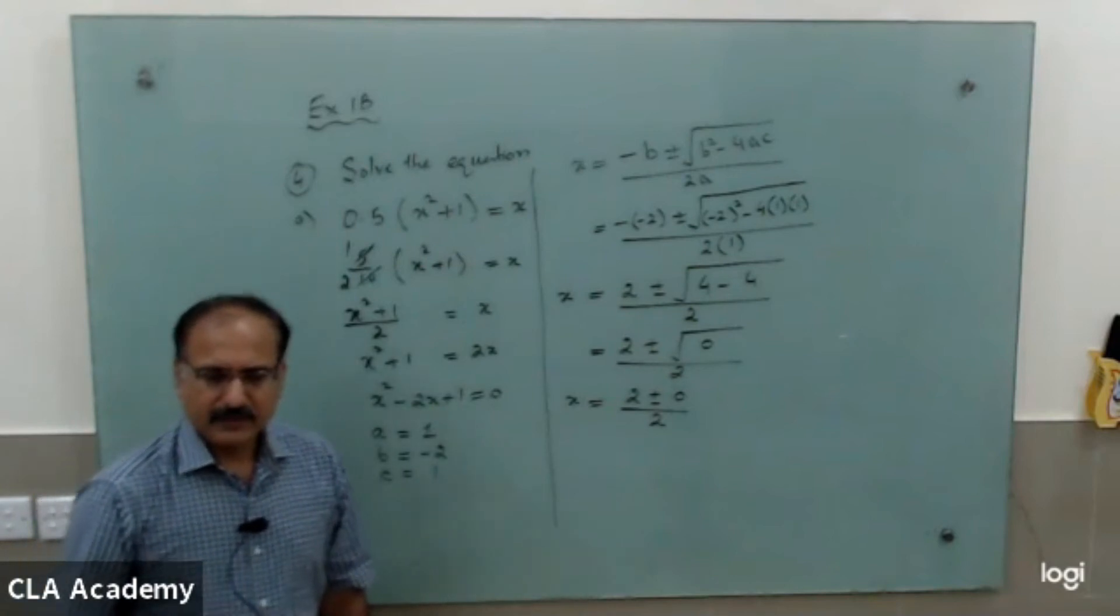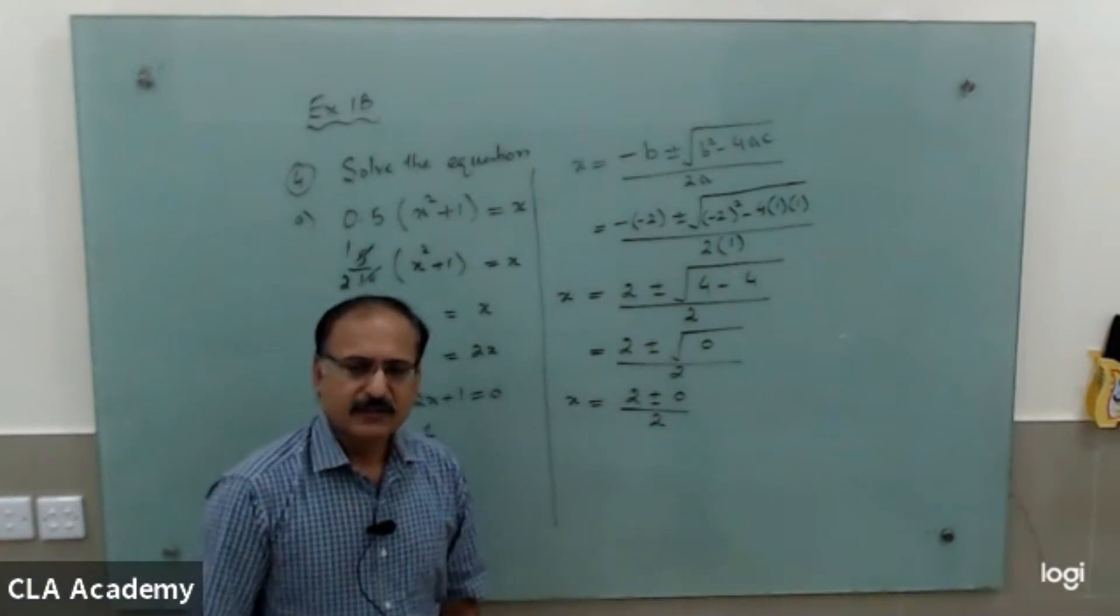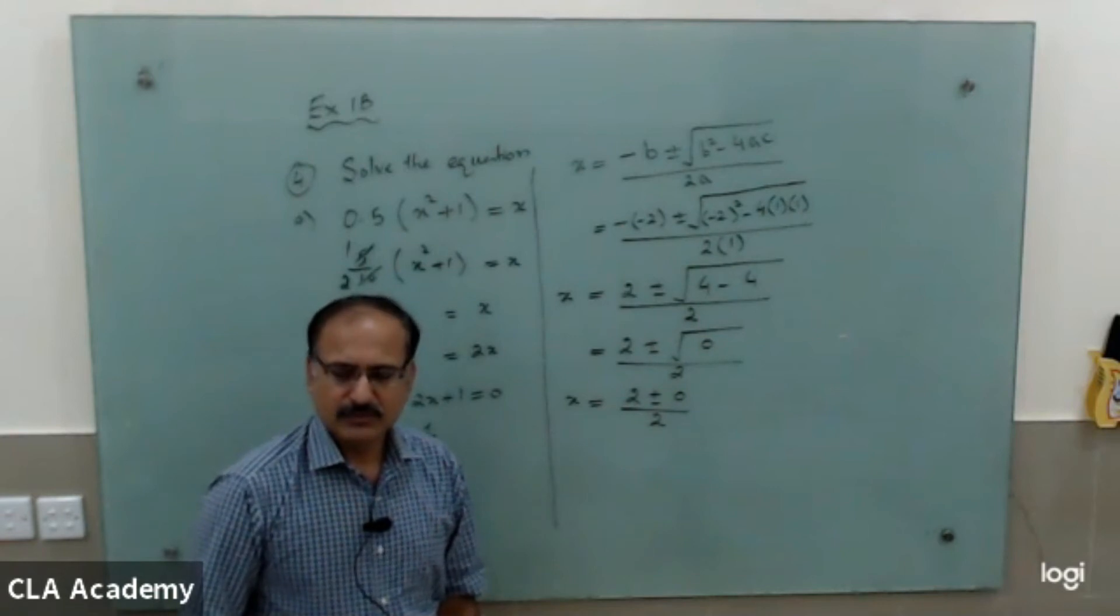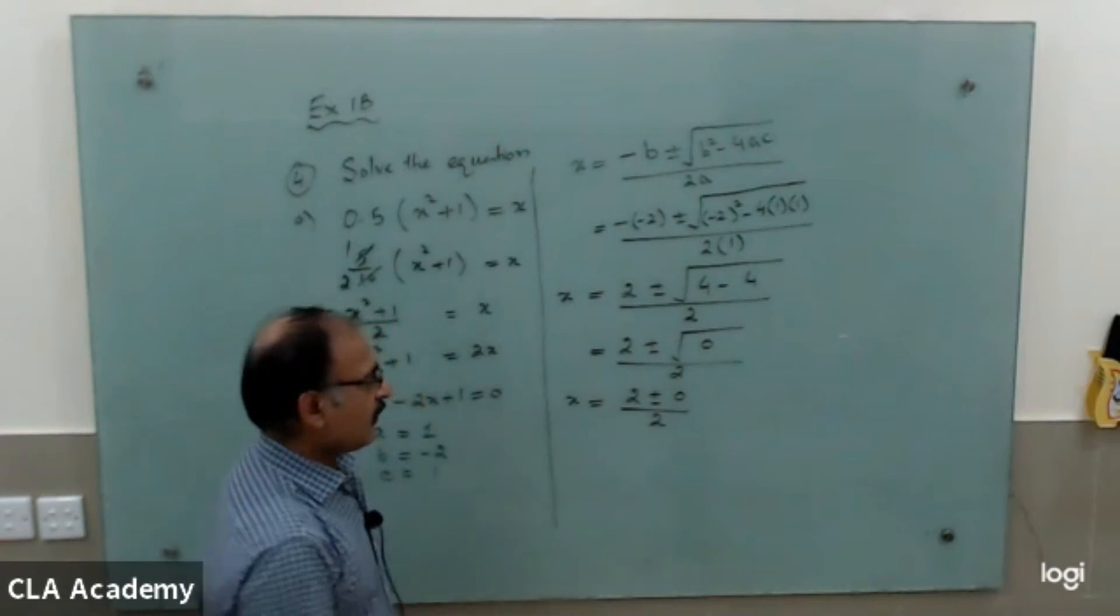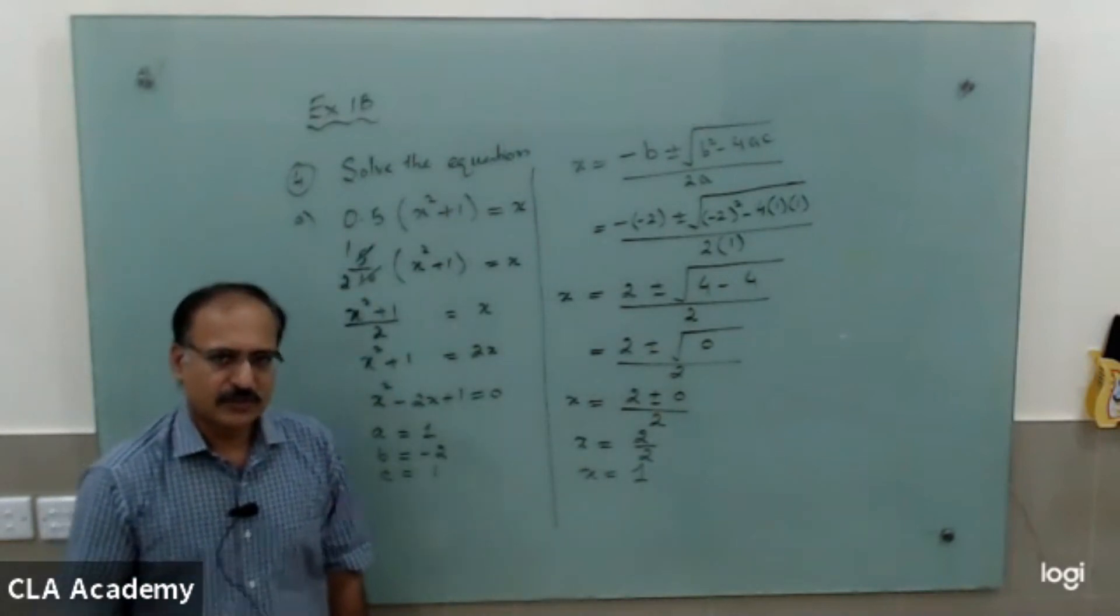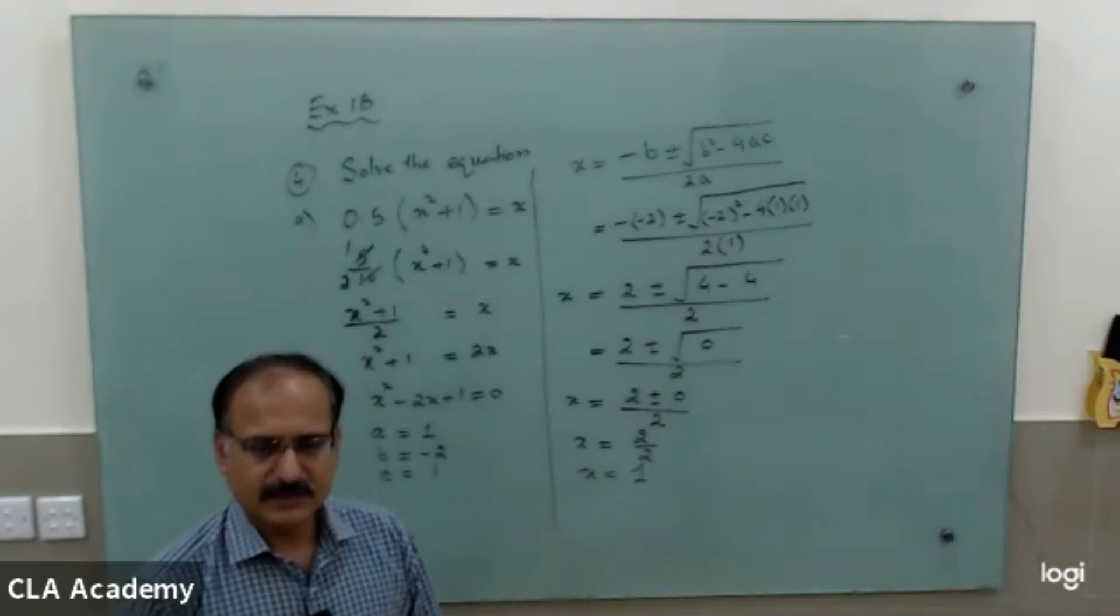So you write as 2 plus 0 or minus 0. Plus 0 or minus 0.